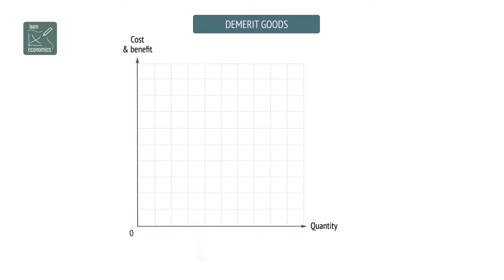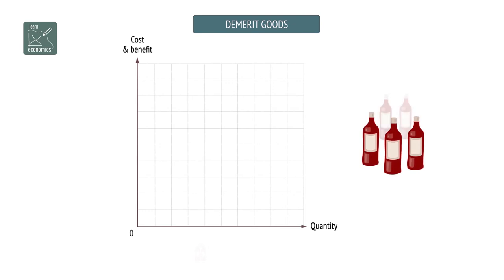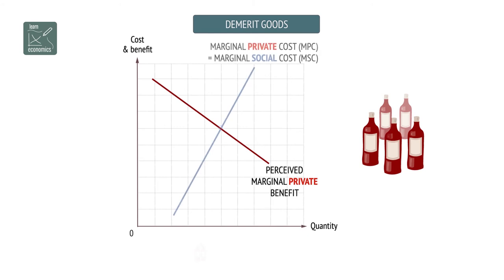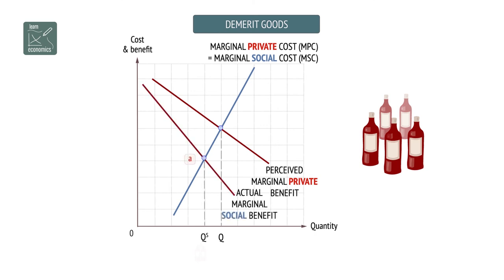Demerit Goods such as alcohol provide less benefit than is perceived by consumers — there is a problem of information failure. Here, the negative external benefit from marginal consumption shifts the social marginal benefit curve to the left. The socially efficient level of consumption is at QS, but markets would oversupply them at Q, as markets only take into account the perceived private benefits and costs.